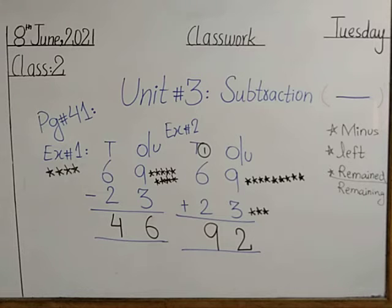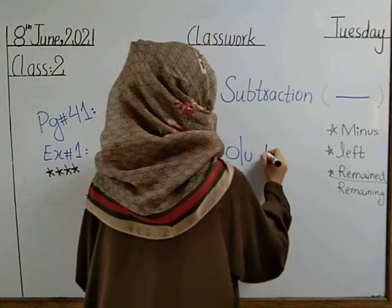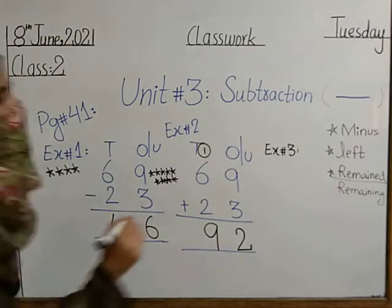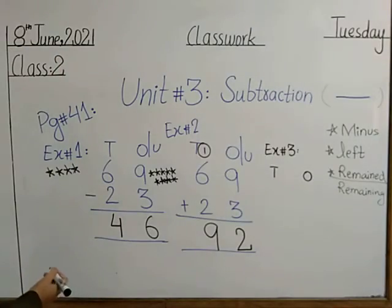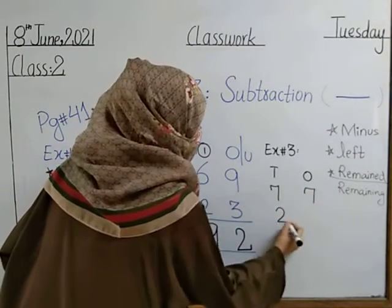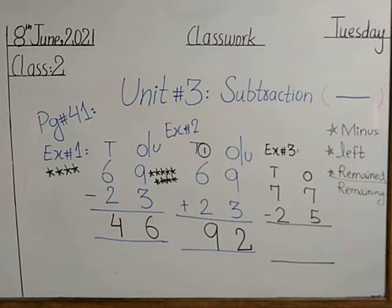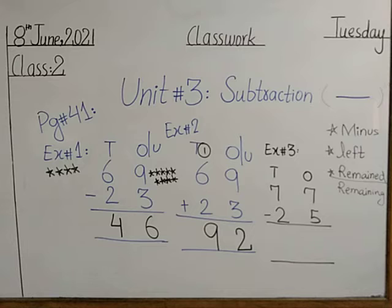Example number three: tens and ones. The numbers are 72 minus 25. From where will we start with the calculation? We will start from the ones place value number. The ones digits are 7 and 5.